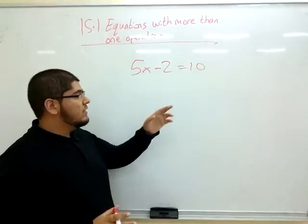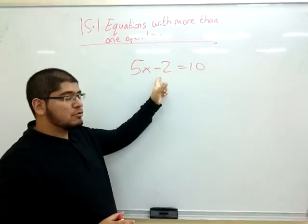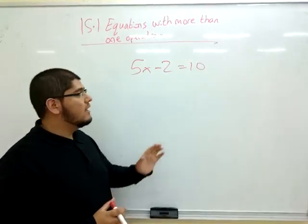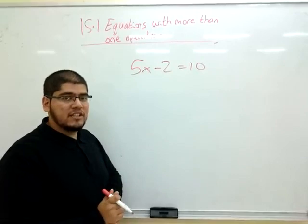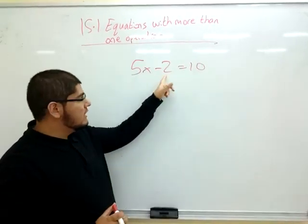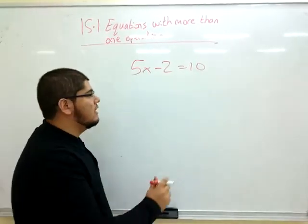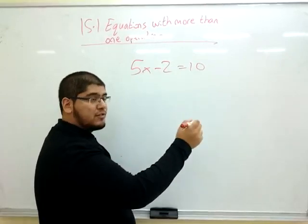First step, I need to undo the subtraction operation. I need to get x by itself, that is the objective. So first things first, get rid of this one by itself. So I need to add 2 to both sides.